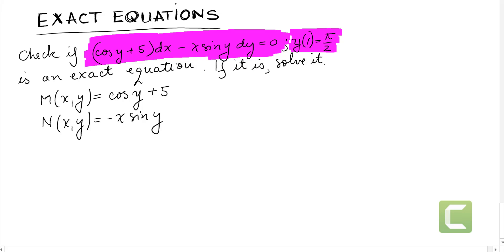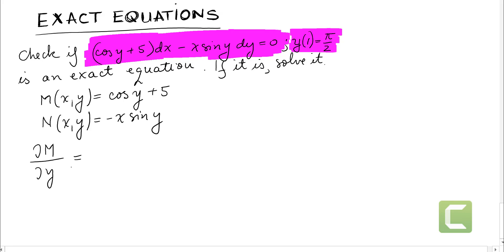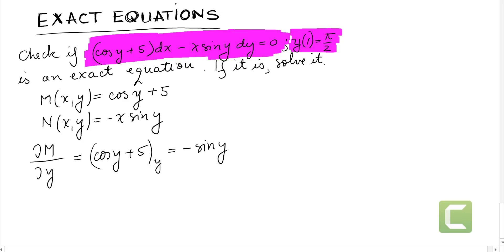The dx and dy are the differentials, we don't write them. The condition of exactness is to check if the derivative of M with respect to y equals the derivative of N with respect to x. The derivative of M with respect to y: cosine of y plus 5, differentiated with respect to y, gives us negative sine y, and 5 prime is 0. The derivative of N with respect to x: negative x sine y, differentiated with respect to x, means y is considered the constant.